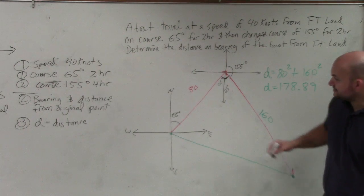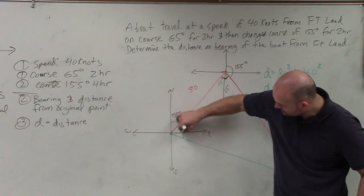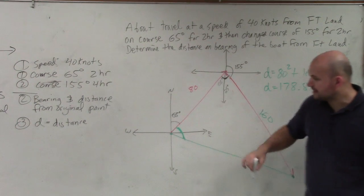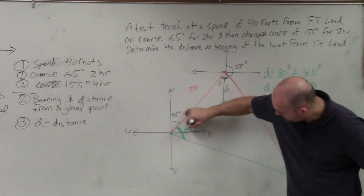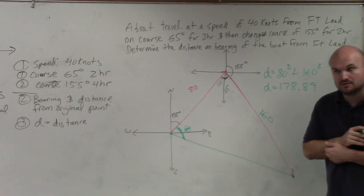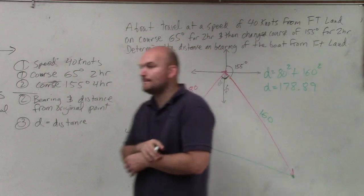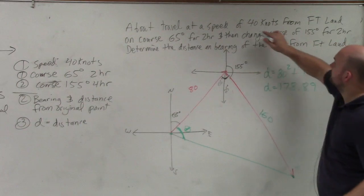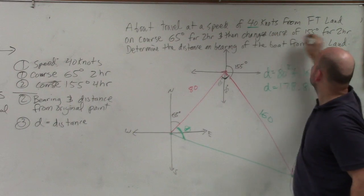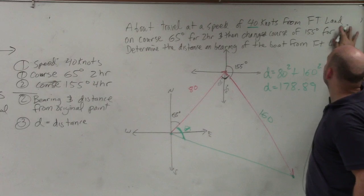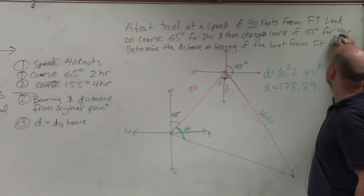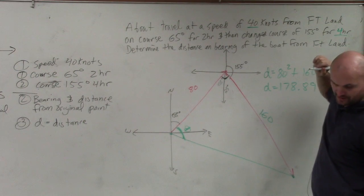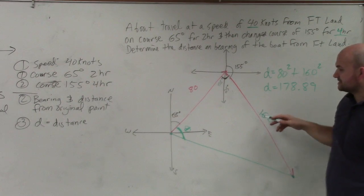Now, the last thing is we need to figure out this direction, right? Or this angle. Correct? How do I do it? 160. 40 knots for, oh, I didn't write that in there, four hours. 40 knots for four hours. Four times 40, 180, or 160.